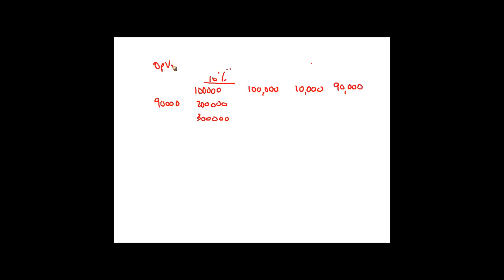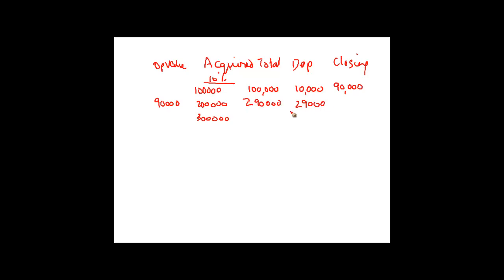The table shows opening value, acquisitions, total, depreciation, and closing value. I got a total value of 2,90,000, claimed depreciation of 29,000 at 10%, and was left with 2,61,000. This 2,61,000 became the opening WDV for the next year; with 3 lakh added, I had 5,61,000 as the total value.